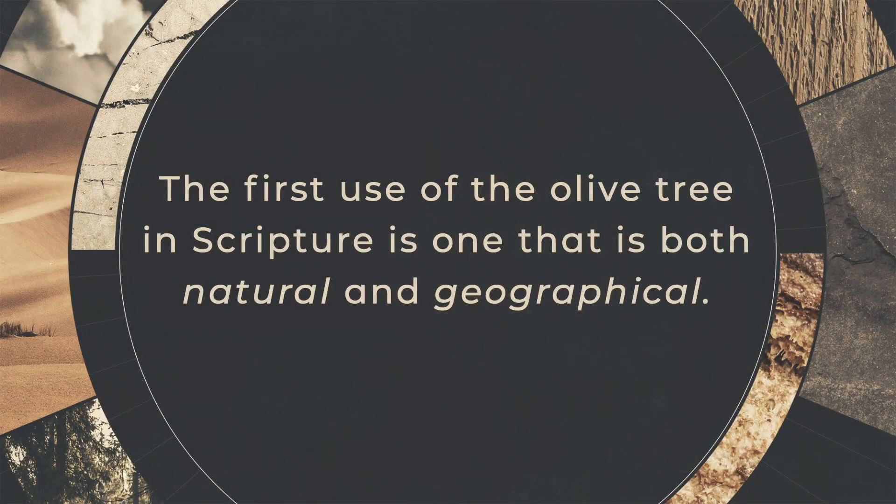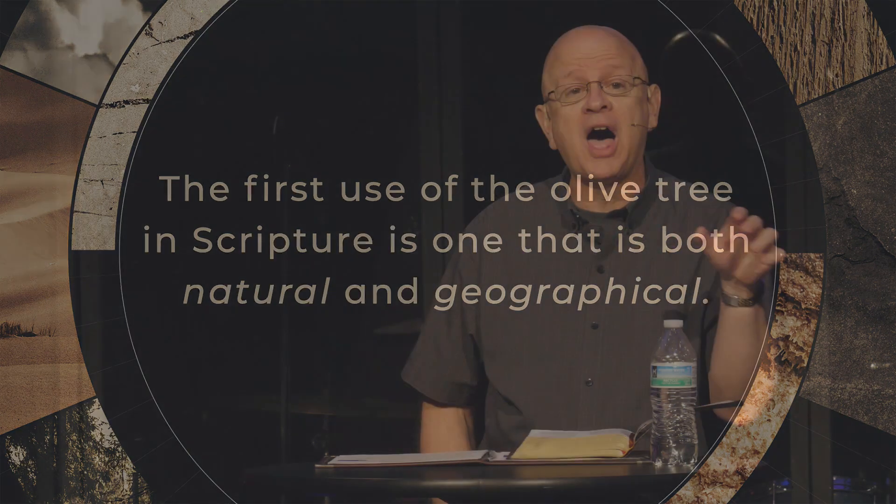A lot of Bible scholars suggest that from the time Noah entered the ark to the time he exited the ark was at least one full year. Noah, remember, was already 600 years old. I'm guessing his patience was probably growing a little bit thin. I am one-tenth exactly of Noah's age at the time, and I can't imagine being forced to wait for one year before you could walk on land again. So the first use of the olive tree in Scripture is one that's both natural and geographical. Sometimes the promised land is referred to as the land with olive trees and honey — a place of life and hope for the wandering Israelites.